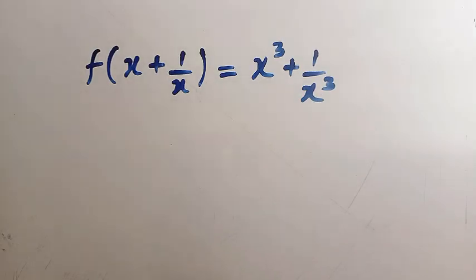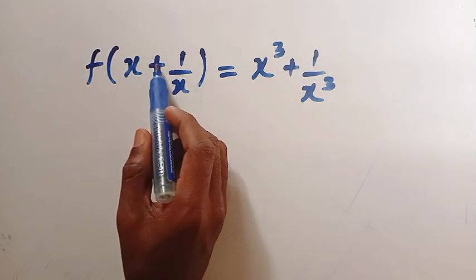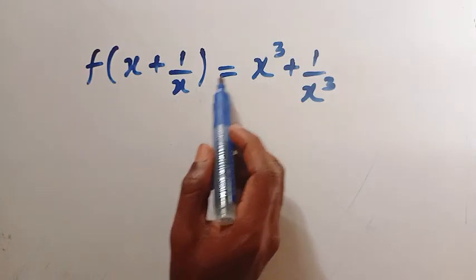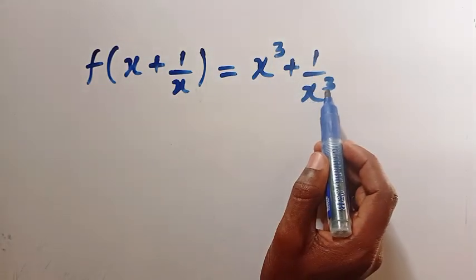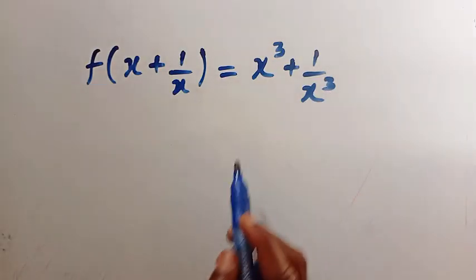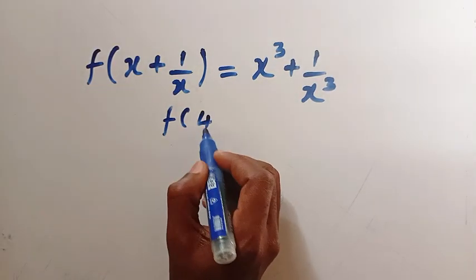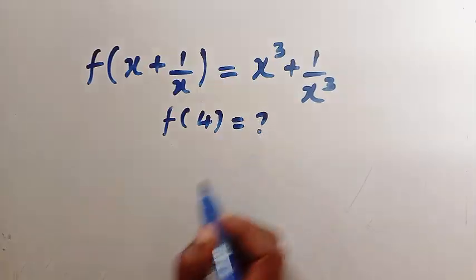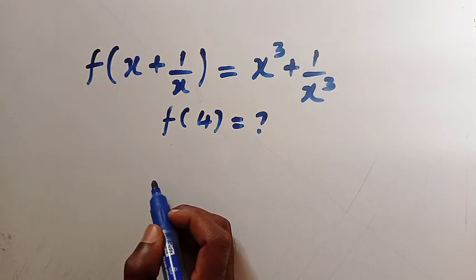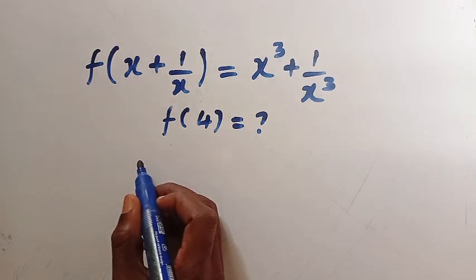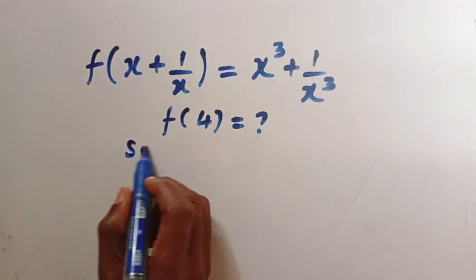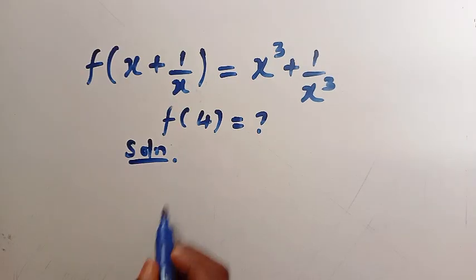Good day viewers, you are welcome. How to solve these nice functional equations: we have f of x plus 1 over x equals x raised to power 3 plus 1 over x power 3. We are interested to find f of 4, and I will be solving this problem in two different ways. If you have any other ways of solving this, drop it in the comment box.